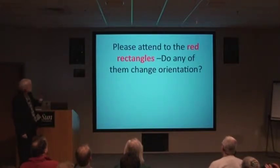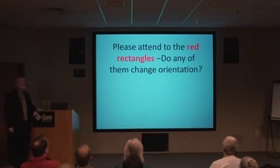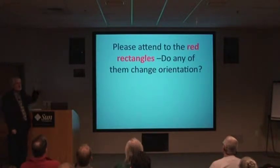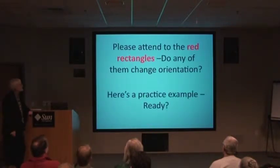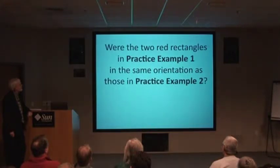Here's the rectangle task: I'll show you arrays of rectangles. Please attend to the red rectangles and ask yourself whether any of them change orientation on the screen between slide A and slide B. Let's do a practice example first — don't write anything yet. Were the two red rectangles in practice example one in the same orientation as those in practice example two? They were different.